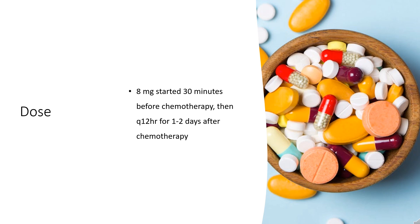Cholestatic pruritus (off-label): 8 mg divided every 12 hours, or 8 mg every 8–12 hours PO, for 7 days up to 5 months. Alternatively, 4–8 mg intermittent short-term; 4 mg dosing used in adults; single dose of 4 mg used in pregnancy. Uremic pruritus (off-label): 8 mg divided every 12 hours, or 8 mg every 8–12 hours PO, for 14 days up to 5 months.